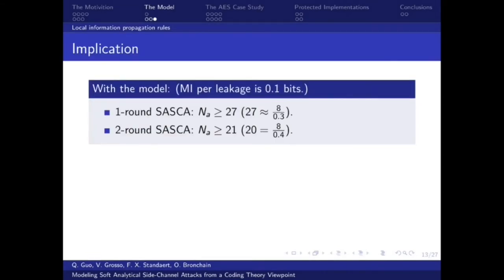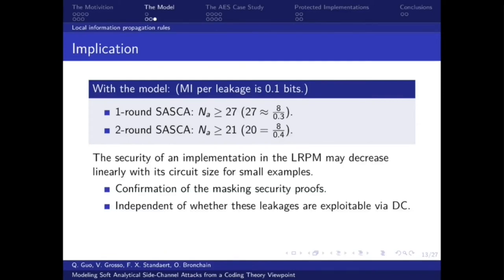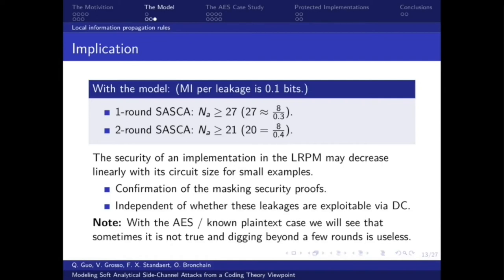If we assume that the mutual information per leakage is 0.1 bits, and with the model, we know that when running SASCA, the required number of samples is at least 27. And for two round SASCA, it is 21. We see that 27 is about 8 over 0.3, and 0.3 consists of two parts. One is from the bivariate leakage for the divide and conquer targets, and 0.1 is the univariate leakage for the SASCA targets. We see that the security of an implementation in the LRPM may decrease linearly with its circuit size for small examples. It is a confirmation of the masking security proofs, and it is independent of whether these leakages are exploitable by DC. However, this is just very small examples. With AES or non-plaintext case, we will see that sometimes it is not true and digging beyond a few rounds is useless.